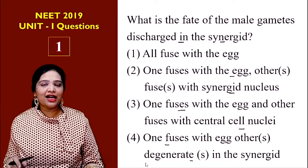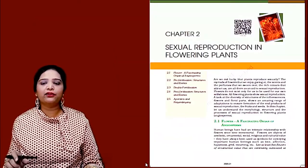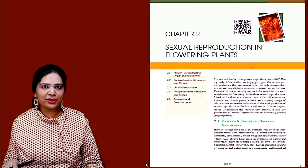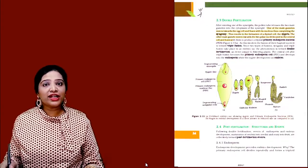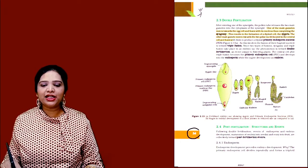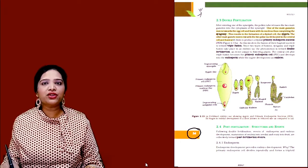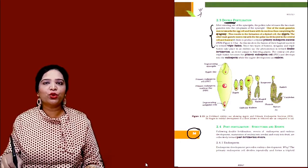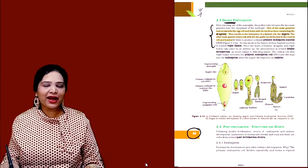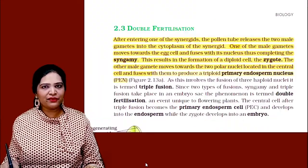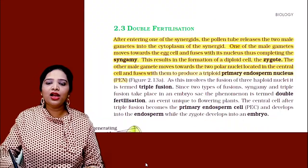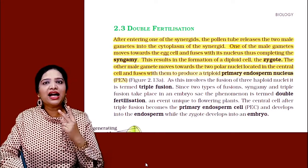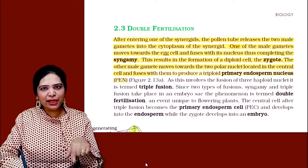So let us see the answer. This question has been taken from Chapter 2, Sexual Reproduction in Flowering Plants. In the NCERT book, page number 34, there is a paragraph under double fertilization which explains these events. Let us zoom in and see exactly what happens inside the embryo sac.